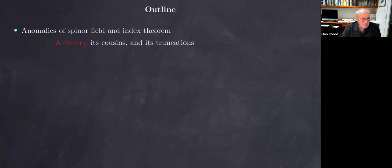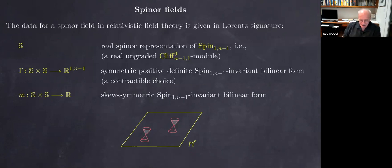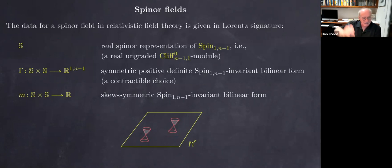Now I want to get on to spinner fields and how K-theory and its cousins enter via the index theorem. What is a spinner field? The theory of a spinner field starts in Minkowski spacetime — an affine space with translations acting on it, with a translationally invariant Lorentz-signature metric. It has null vectors — the red light cones — and there's one more piece of structure, which is a time orientation: you choose which component of the time-like vectors is positive, giving a notion of positive energy needed to do the Wick rotation.